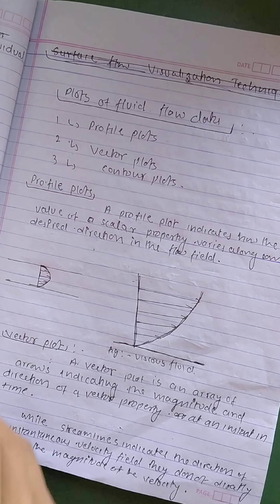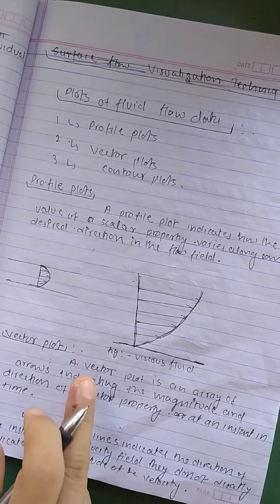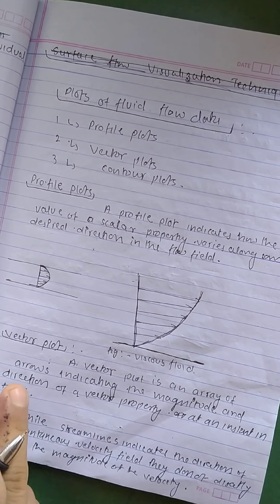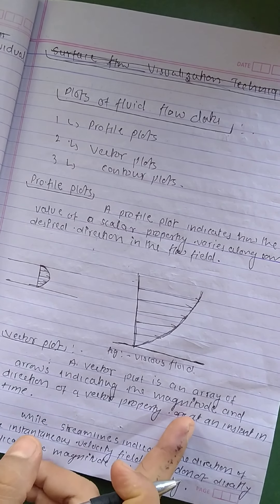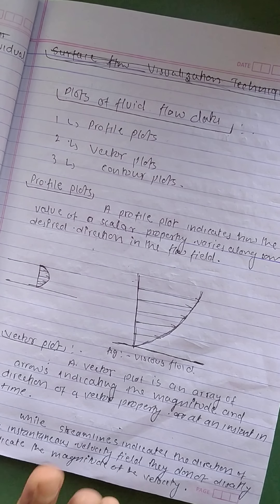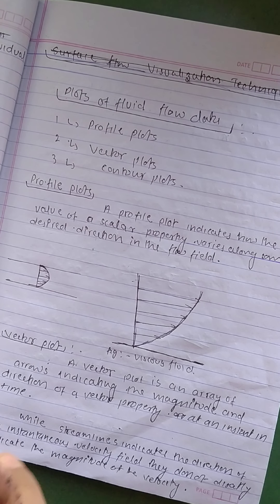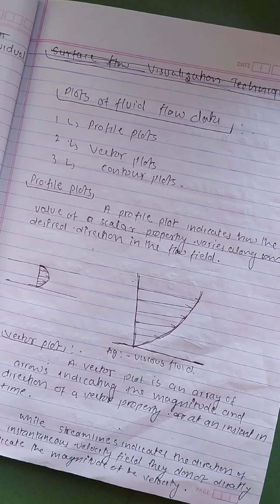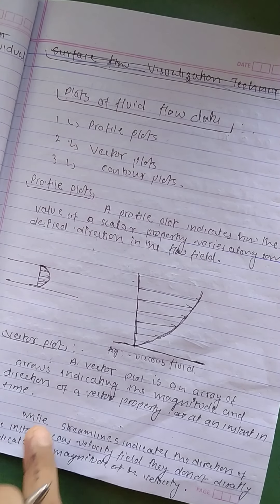Now come to the second number. What is vector plot? A vector plot is an array of arrows indicating the magnitude and direction of vector property at an instant in time.